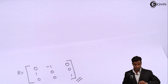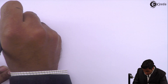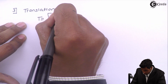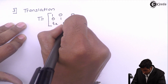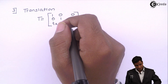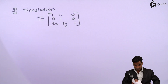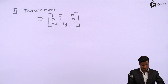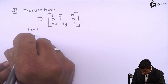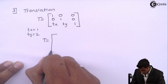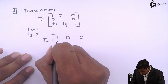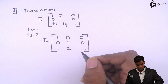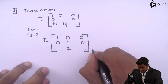Third transformation is translation. The standard translation matrix T is: 1, 0, 0 / 0, 1, 0 / Tx, Ty, 1. From the given data, Tx = 1 and Ty = 2, so replacing those values gives the translation matrix: 1, 0, 0 / 0, 1, 0 / 1, 2, 1.